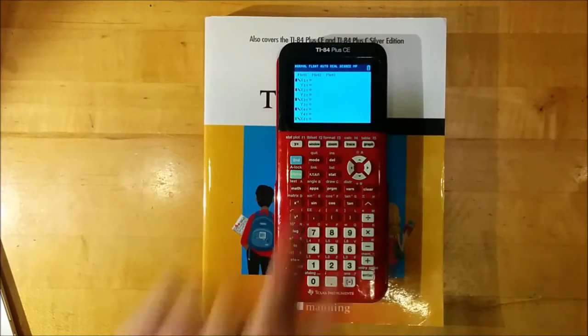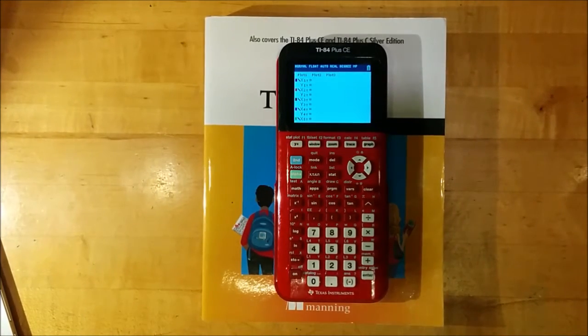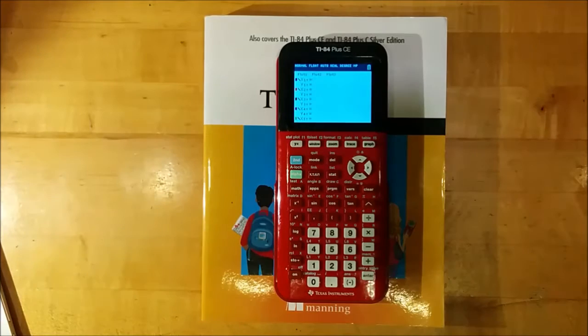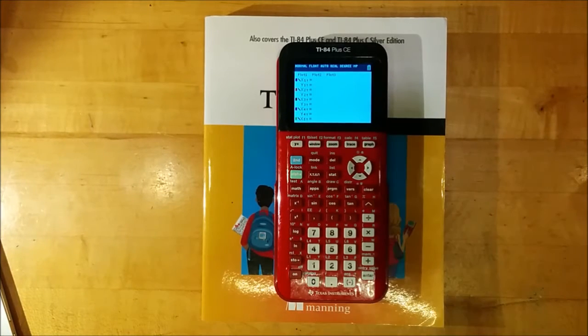In addition, when you go to the Y equals menu with the Y equals key, you'll see that instead of Y1, Y2, and so on, you have X1t and Y1t, X2t and Y2t, and so on. These function pairs let you define X and Y functions for a Parametric Function in terms of the independent variable t.